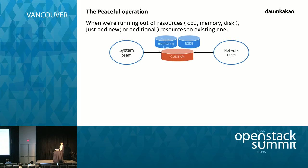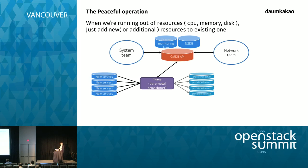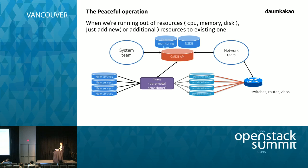Most of the time, when we're running out of resources like CPU, memory, and disk, we just add new resources to our existing ones. The system team prepares servers using NKS, which is our bare-metal provisioner, and they provision servers to our team or other development teams. The system team tries to use the CMDB API as much as possible so we can interact with the API. After the server is ready, the network team sets up the switches, routers, and VLANs to work with the network.